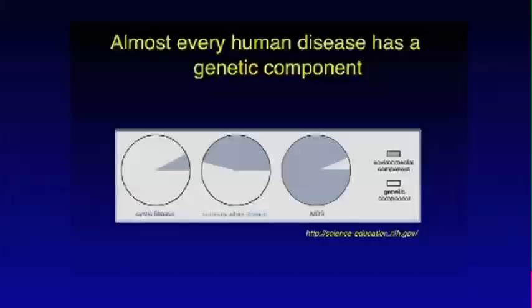Almost every disease has some genetic component — it could be a large component or a small component. Cystic fibrosis is a good example where a single gene, when mutated, leads to disease, so we'd say it has a large genetic component. On the other side is HIV-AIDS, which might have a large environmental component: if you're not exposed to the HIV virus, you're very unlikely to spontaneously develop AIDS. But even something with a large environmental component has some genetic component as well.